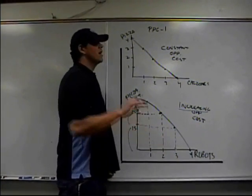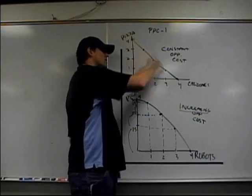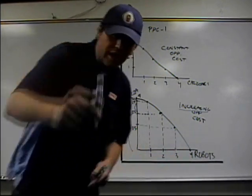Increasing opportunity cost, vote out. Constant opportunity cost, straight line PPC. Now you got it. Until next time.